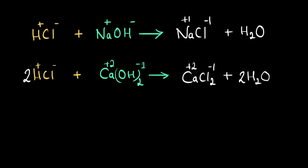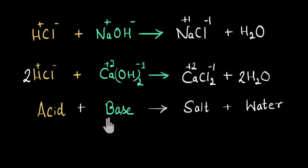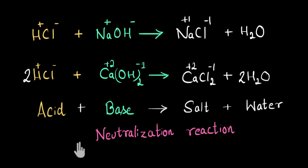So the conclusion is that an acid reacts with a base to give us salt and water, both neutral products. Acid and base cancel each other's effect, giving neutral products, and that's why we call this a neutralization reaction. By the way, later you will study that some salts can also be acidic or basic — they need not be neutral.